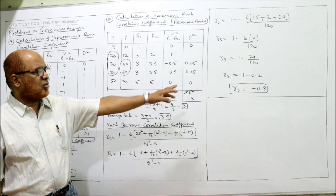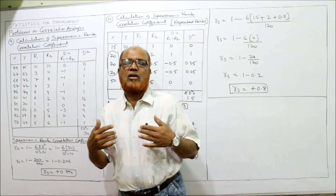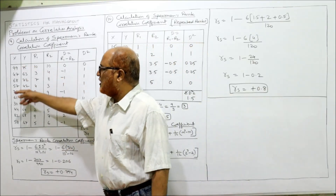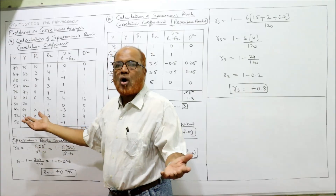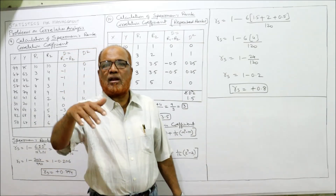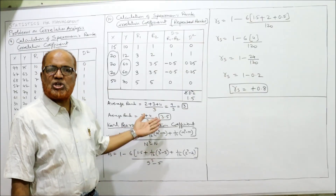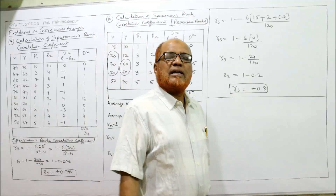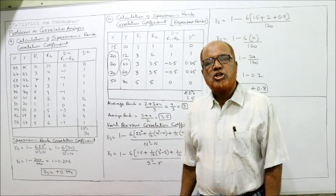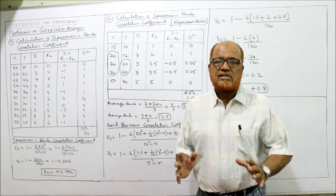In this video, two problems were explained. In one problem, ranks were not given and we assigned them — with all unique values, so the standard formula was applied. In the other problem, some values were repeated, requiring modified formula with correction terms. Totally 10 problems have been explained on correlation analysis, marking the end of the chapter. The next topic will be regression analysis.